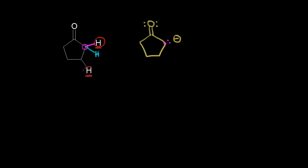Now let's say a base comes along and takes this other proton. That would mean the electrons in dark blue would remain behind on this carbon in dark blue that I just circled. So let's draw that conjugate base. Let me draw in our ring. This oxygen would have two lone pairs of electrons on it. The electrons in dark blue would end up on this carbon in dark blue, which gives that carbon a negative one formal charge. Again, remember this carbon also has a hydrogen bonded to it, but I'm not going to draw it in on the conjugate base. Which of those two conjugate bases is the most stable?